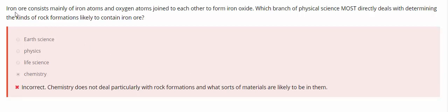This question asks, iron ore consists mainly of iron atoms and oxygen atoms joined to each other to form iron oxide. So here they are talking of chemistry.